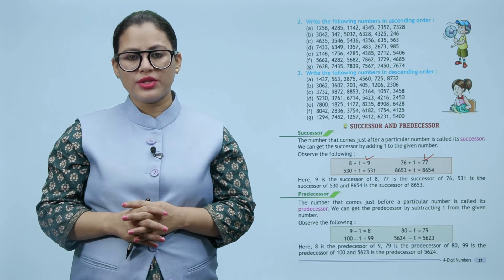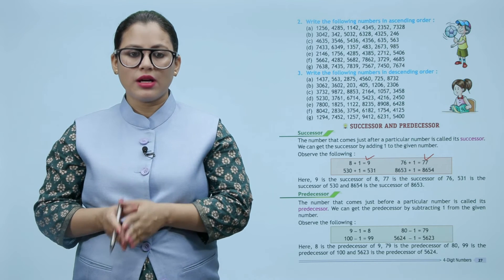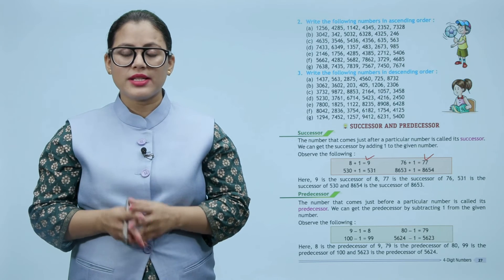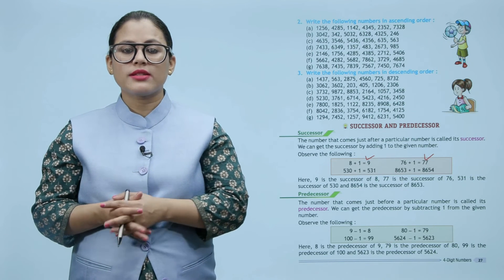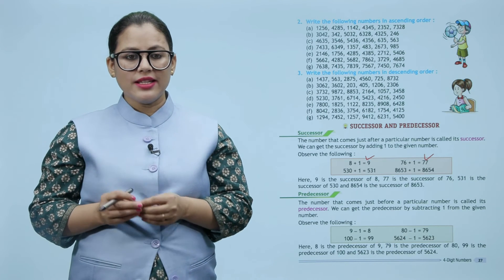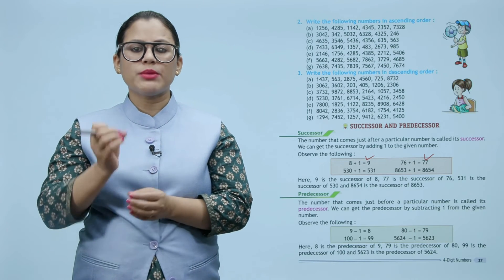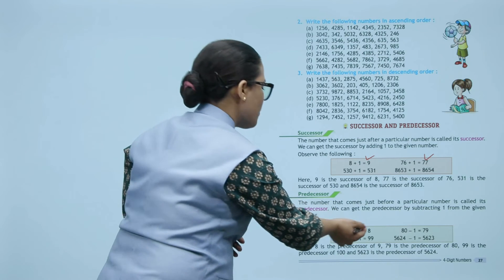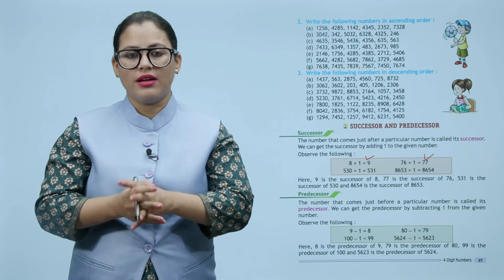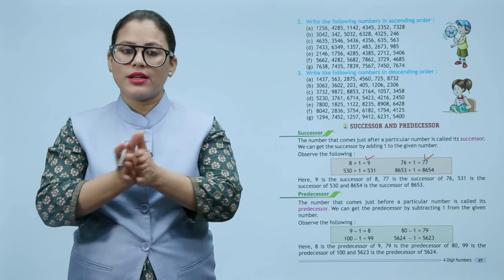Predecessor: the number that comes just before a particular number is called its predecessor. We can get the predecessor by subtracting 1 from the given number. For example: 9 minus 1 equals 8, 100 minus 1 equals 99, 80 minus 1 equals 79, and 5624 minus 1 equals 5623. Here, 8 is the predecessor of 9, 79 is the predecessor of 80, 99 is the predecessor of 100, and 5623 is the predecessor of 5624. Predecessor ka matlab hota hai kisi bhi particular number se ek number pehle — just one number before.